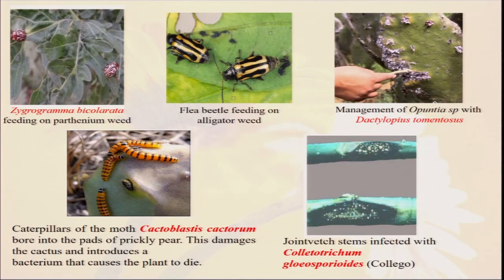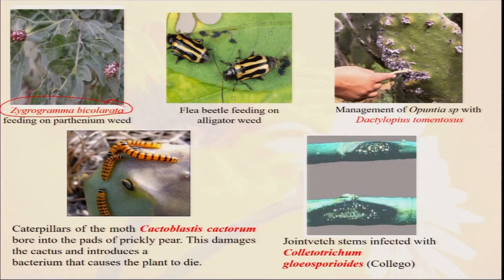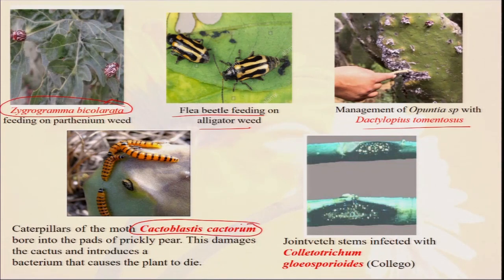Different types of pictures show how different types of insects or pathogens are being used as biocontrol agents. This is Zygogramma bicolorata — I have already told — used to feed the plant of Parthenium. Everywhere we go to the roadside or no man's land or railway track, lots of Parthenium weeds are there, and there is experiment that has been done showing they are feeding the Parthenium. Similarly, flea beetles are feeding the alligator weed. For Opuntia weed, we can use Dactylopius strigosus. The caterpillar of the moth Cactoblastis cactorum bores into the pads of Prickly Pear and can reduce that damage. Similarly, there is Colletotrichum as a biocontrol pathogen. So, always we have to make some combination of all these approaches to effectively manage weeds in organic farming.